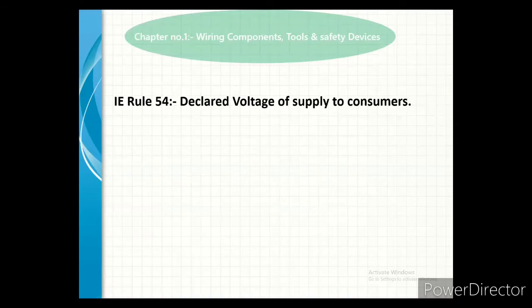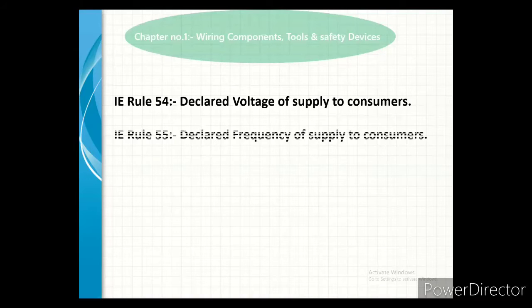Our next rule is Rule number 54, declared voltage of supply to the consumer. Here, we declare which voltage is supplied to the consumer. Rule number 55, declared frequency of supply to the consumer — this tells us which frequency is provided to the consumer for their supply voltage.